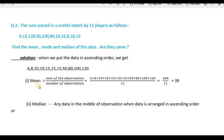First of all, we find the mean. We apply the formula: mean = sum of observations divided by number of observations. The sum of observations is 428 and the number of observations is 11. So the mean is 428 divided by 11, which equals 39.